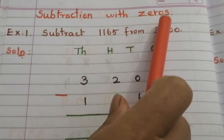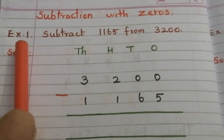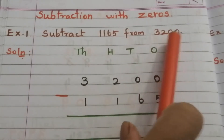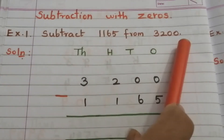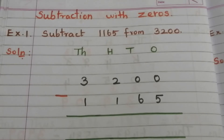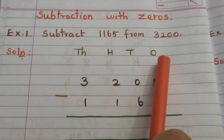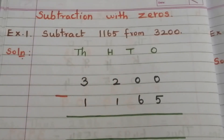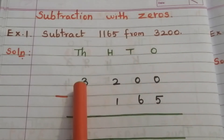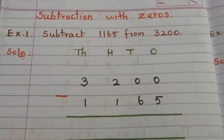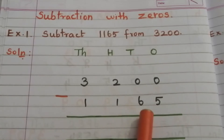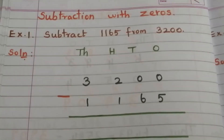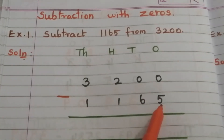Example 1: subtract 1165 from 3200. These are two four-digit numbers. Write the place value headings — thousands, hundreds, tens, ones — and leave two spaces for writing borrows. Then write the big number 3200, then the small number 1165, and put the minus symbol.